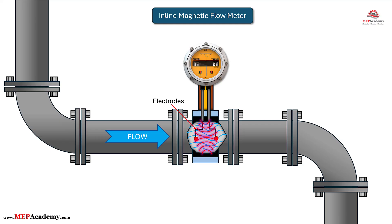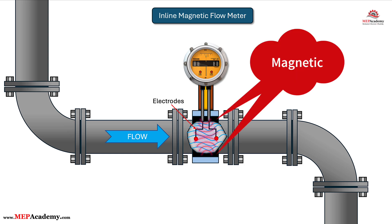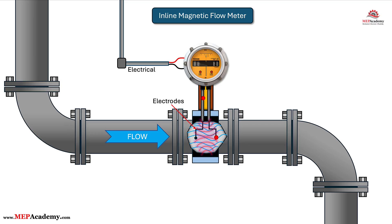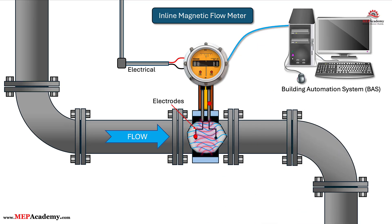In-line magnetic flow meters measure flow based on Faraday's Law of Electromagnetic Induction. Two opposing magnets create a magnetic field that the fluid passes through. As the fluid passes through the magnetic field, the electrodes detect the voltage, which is proportional to the fluid flow. This flow meter requires electrical power or an onboard battery. The information gathered can be sent to a building automation system for various sequence of operation control strategies. There are no moving parts or obstructions in the flow path, providing very low to no pressure drop, making them a low-maintenance meter that is easy to calibrate.